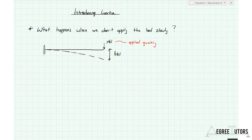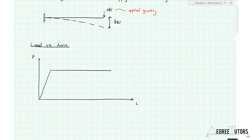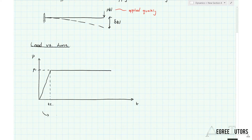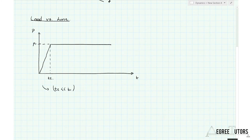Looking at our cantilever beam, if we plot the load versus time history for that structure, the load goes from zero up to the same magnitude as before - up to a value of p1 - but now it happens over a time t2. The key thing here is that t2 is a lot less than t1, where t1 was the time it took to rise to p1 in the last lecture when it was being applied slowly. Now it's being applied rapidly.